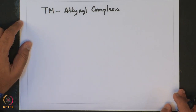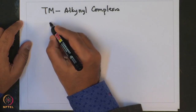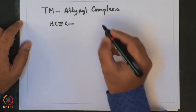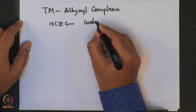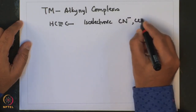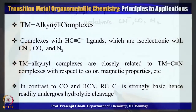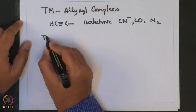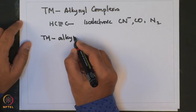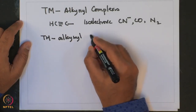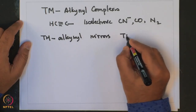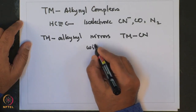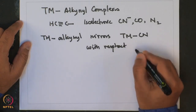Transition Metal alkyne complexes are complexes with ligands bearing an alkyne triple bond. These ligands are isoelectronic with cyanide, carbon monoxide, and dinitrogen (N₂). Even these Transition Metal alkyne complexes mirror Transition Metal cyanide complexes with respect to their colour and magnetic properties.